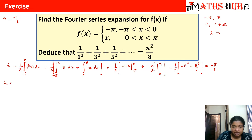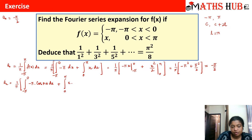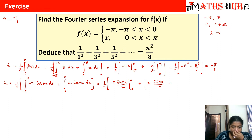Now let us calculate aₙ. So aₙ = 1/π: the first integral from minus π to 0 of minus π · cos(nx) dx, and the second integral from 0 to π of x · cos(nx) dx. Solving by IBP (integration by parts): for the first integral we get minus π · [sin(nx)/n] from minus π to 0; for the second, x · [sin(nx)/n] minus [minus cos(nx)/n²] from 0 to π.